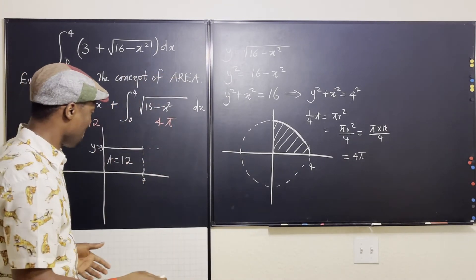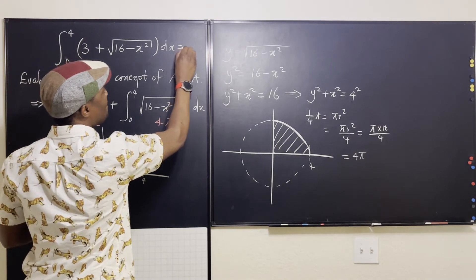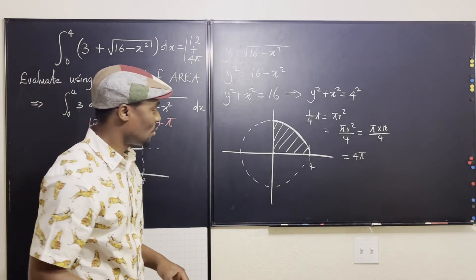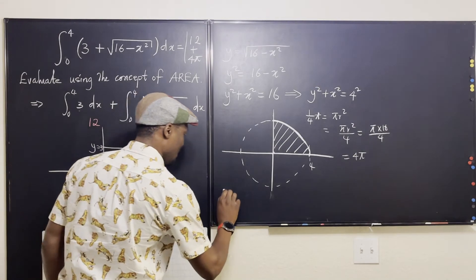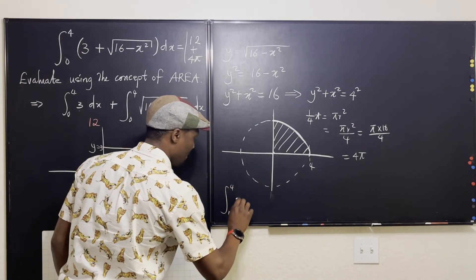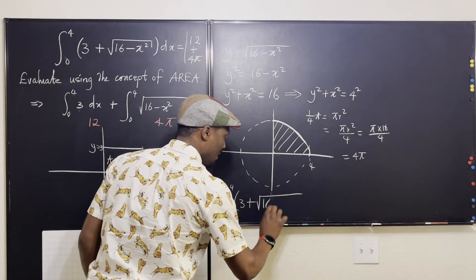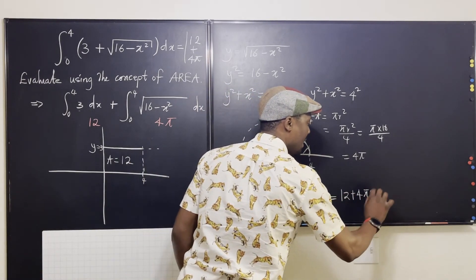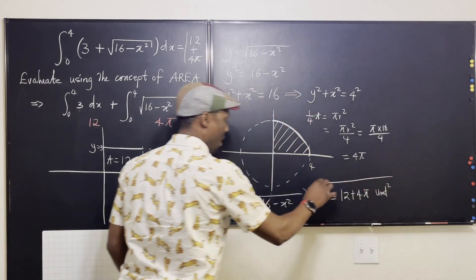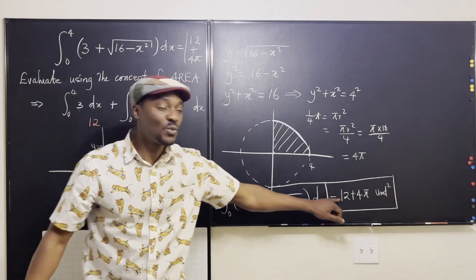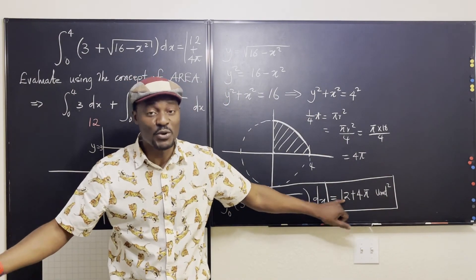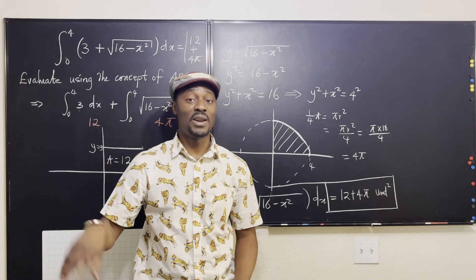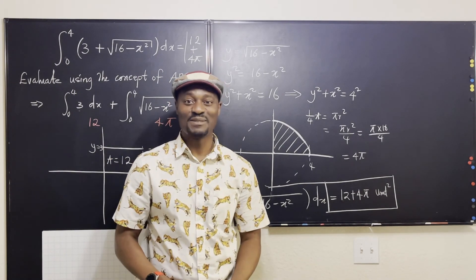So the answer to this problem is that the integral from 0 to 4 of 3 plus the square root of 16 minus x squared dx is equal to 12 plus 4π unit squared. That's what you want to show, and that's what the other methods will give you too. You just need to sketch those little tiny graphs, and that's it — it's a lot better than using whatever application you're using. Never stop learning. Those who stopped learning have stopped living. Bye bye.